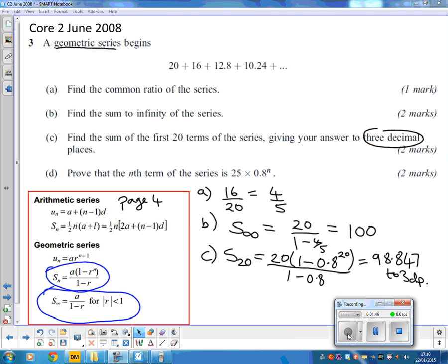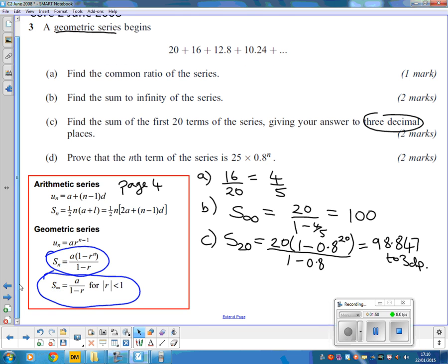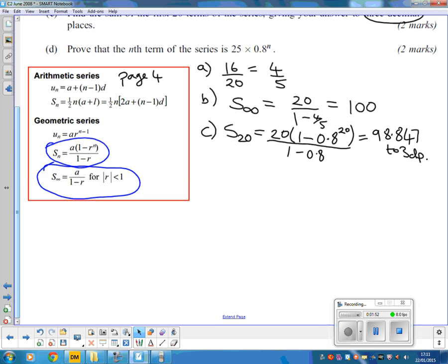All fairly straightforward so far, we just needed to use the formula in the book. Now on to the last one, which changes slightly. Now we want to prove that the Nth term of this series is 25 times 0.8 to the N.